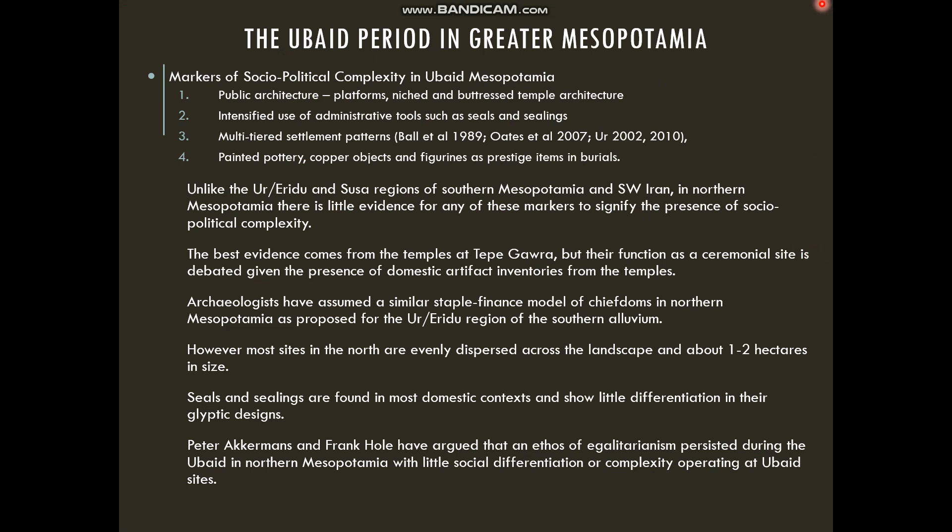Turning to ideas about the Ubaid period in greater Mesopotamia: in the southern alluvium, at sites like Tel Abada, Eridu, and Susa, we see markers of sociopolitical complexity — public architecture, platforms, niched and buttressed temples. Outside of Tepe Garwa and possibly Tel Zedan, temples are absent in northern Mesopotamia. We also see intensified use of administrative tools such as seals and sealings, and multi-tiered settlement patterns around sites like Tel Ahawa and Tel Brak that mimic those seen in southern Mesopotamia around Ur and Eridu.